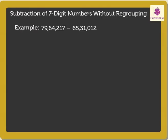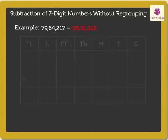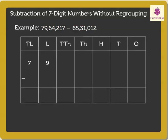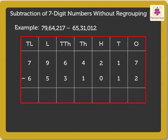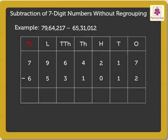Now, let us subtract the 7-digit numbers 79,64,217 and 65,31,012. Write the numbers 79,64,217 and 65,31,012 in the place value chart — that is, in the 1s, 10s, 100s, 1000s, 10,000s, 1,00,000s and 10,00,000s columns. Always start from the 1s column and move left.